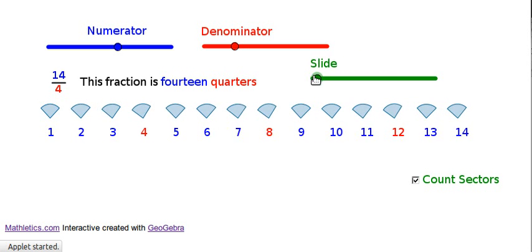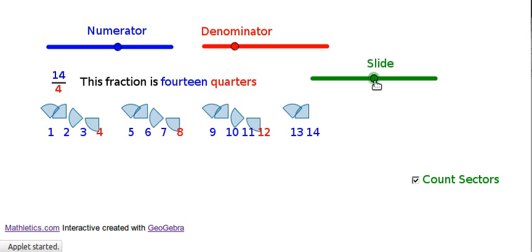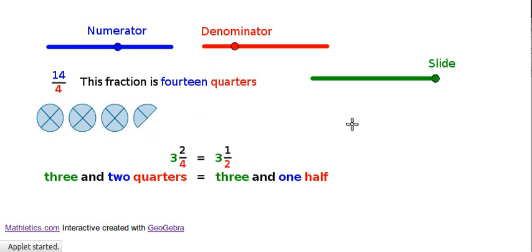And so if you rearrange them and you stop thinking about them as 14 quarters, and you want to think about them in groups of whole numbers, you rearrange them and think about them as 3 and 2 quarters, which is the same as 3 and 1 half.